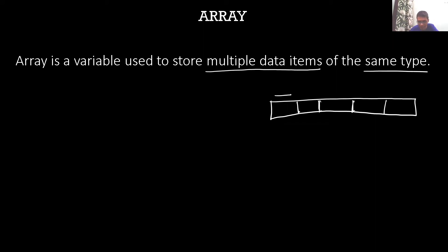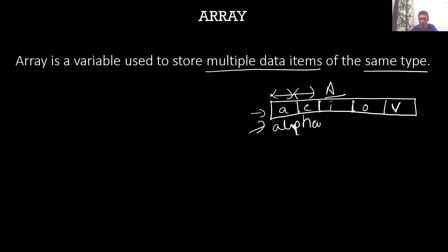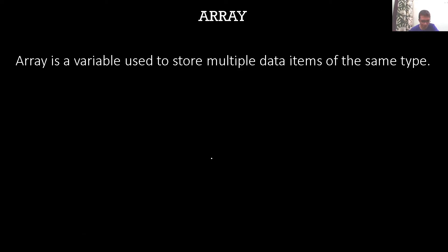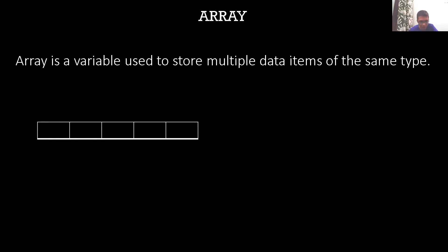Each of these chunks is of the same size and will carry a single data item. For example, if this array can store only alphabets, it will store alphabets like A, E, I, O, V. So here we can see that this array is storing alphabets. We can visualize an array as a large block of memory divided into small chunks, and each of these chunks will store a single data item.